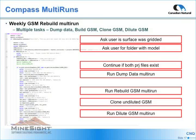Another use of Python and Compass: we rebuild our GSM weekly based on the latest topography. Using Python, you can simplify the workflow so no user has to open Compass files or multi-runs. First we ask the user if they've gridded a surface into an item. Next the script asks the user for a folder containing the model and checks that both project files exist. In the block model project it runs a multi-run to dump data for the GSM. After the data is complete, it runs the GSM rebuild multi-run in the GSM project. You can also copy files with Python — since I already have a diluted GSM in my PCF but need to redilute the new model, I copy the GSM model over my diluted version and run one more multi-run. Once the surface is gridded and the folder is selected, the user just needs to wait for the procedure to finish.